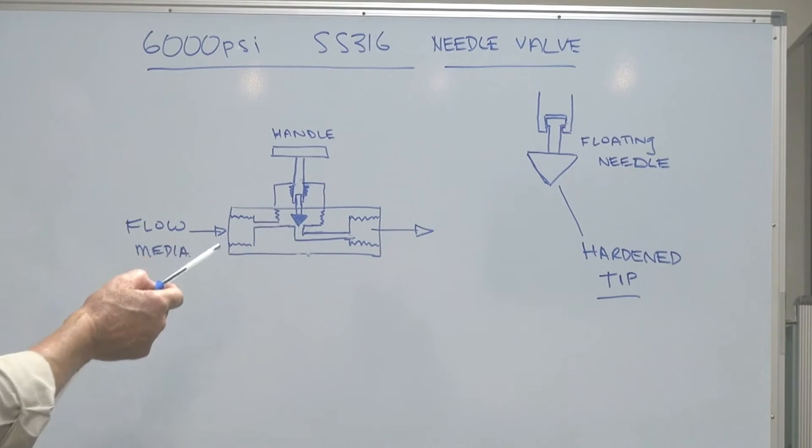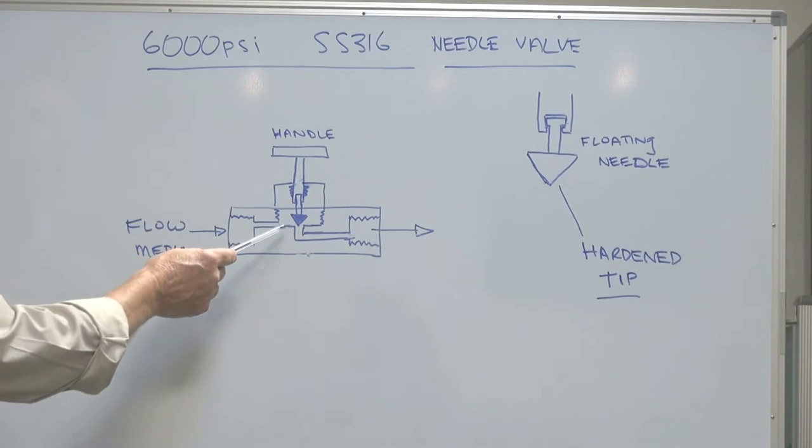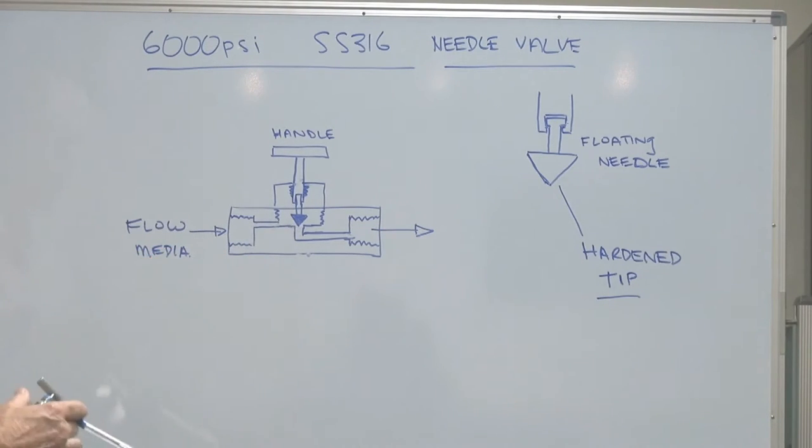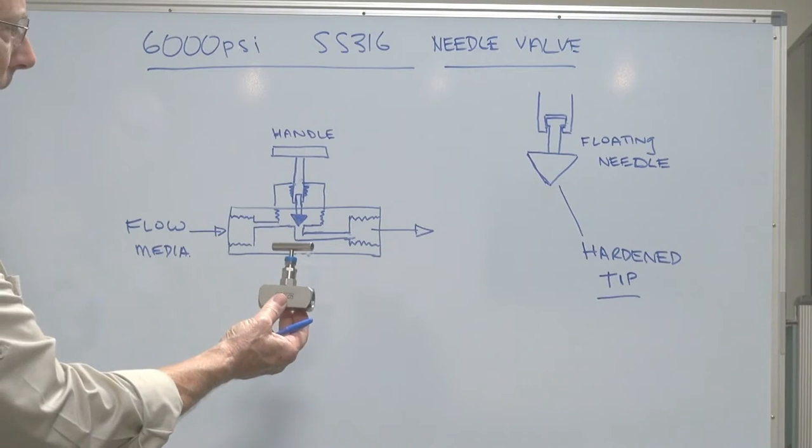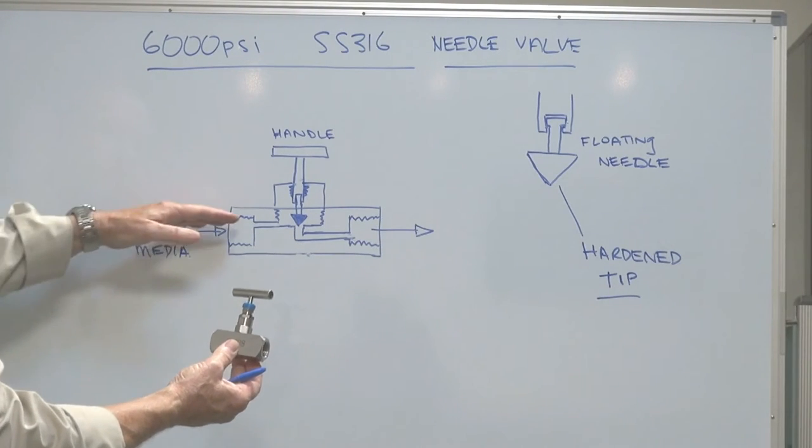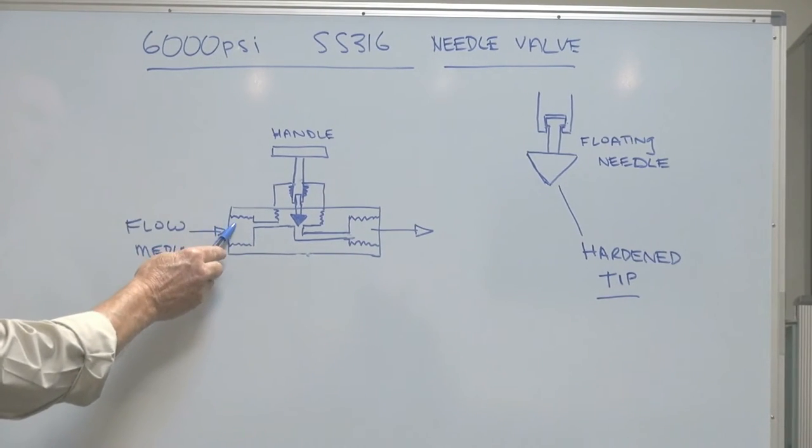I'll show the needle valve in an exposed view. Flow comes in here, goes over the top of the seat - it's a restriction - down and out through here.